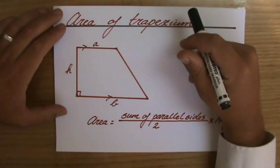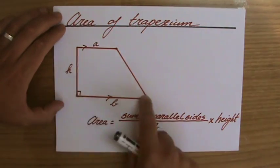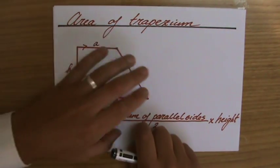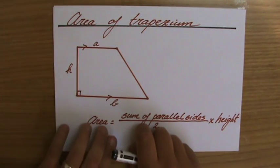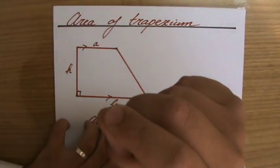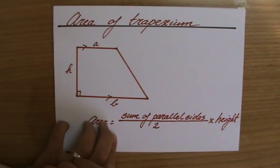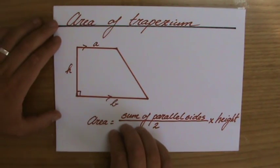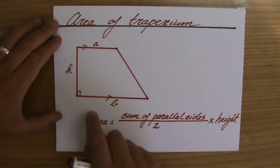So I sketch a trapezium here, and why is this a trapezium? Well, a trapezium is a quadrilateral, first of all, so a two-dimensional figure with four sides or four angles.